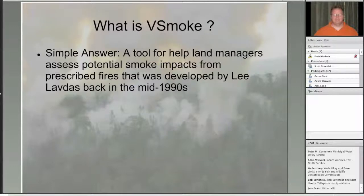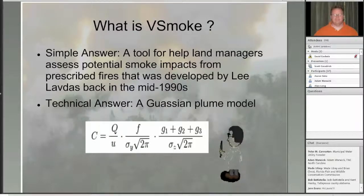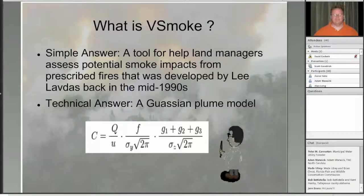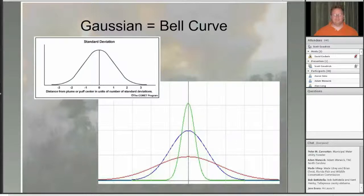For the more technical answer to what vSmoke is, it's what's referred to as a Gaussian plume model. There's an equation here — we won't deal with it anymore. But the real key is this idea of the Gaussian plume model, which is essentially a collection of bell curves. Everybody's heard of grading on the curve — this is basically smoke on the curve.